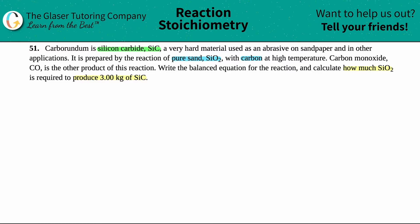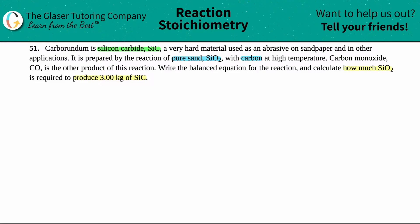They're saying that this compound — the carborundum — is just silicon carbide. It is prepared, meaning made, by a reaction. So here are the starting materials: I have to react pure sand, which is SiO2, with carbon. So we have to add the sand and the carbon together — literally plus the carbon — and that's the reaction.